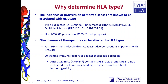Likewise, the progression of some diseases is linked to HLA type. In HIV, B*5701 is associated with protection against the disease and B*3501 with faster disease progression. So it is important to understand the HLA association when developing therapies or carrying out research, and to ensure that the correct donors are included in studies.